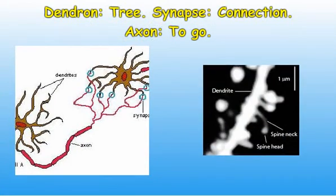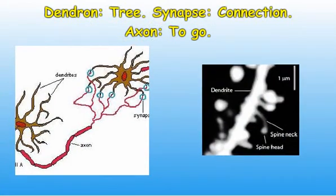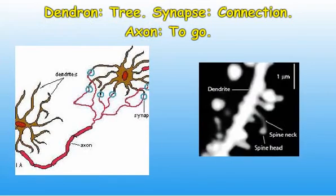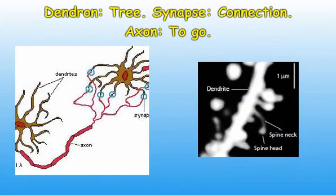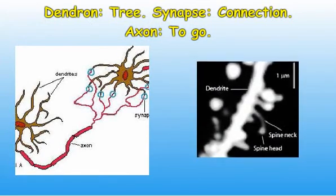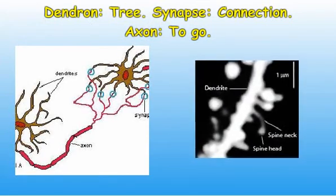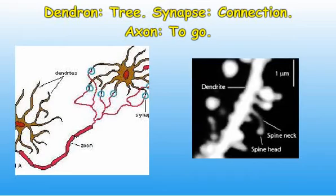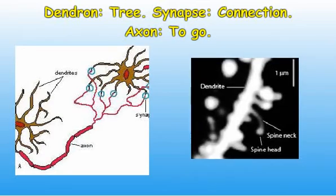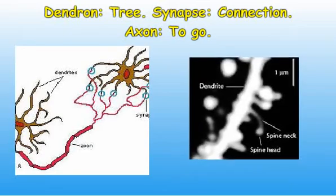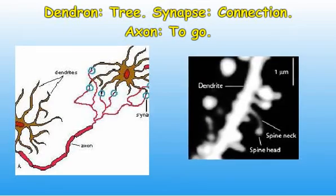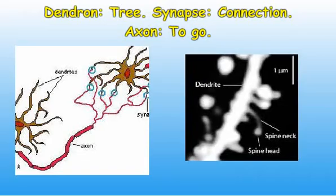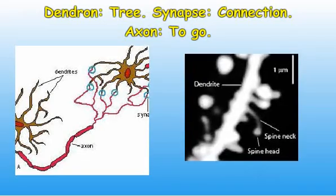Dendritic spines have receptors or synapses on their surface. 'Synapse' means connection in ancient Greek. Synapses receive chemicals or neurotransmitters from other nerve cells. The axon is a single fiber which transmits information to other neurons. 'Axon' means to go or to travel in ancient Greek.